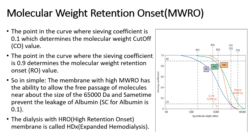Finally, molecular weight retention onset, or MWRO, is a relatively new concept in membrane technology. In the graph, three types of dialyzers are shown — high flux, high cutoff, and high retention onset — according to their sieving coefficients. As molecular weight increases, the sieving coefficient decreases. The high retention onset, or HRO, membrane allows clearance of molecules up to 65,000 daltons, while preventing albumin leakage with a lower albumin sieving coefficient of approximately 0.1. Dialysis using an HRO membrane is known as HDX, or expanded hemodialysis.